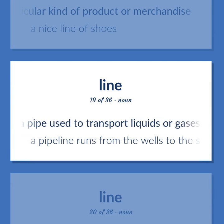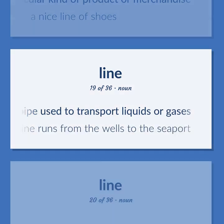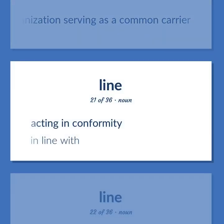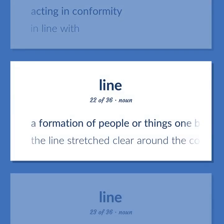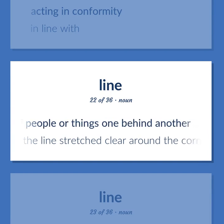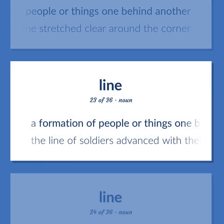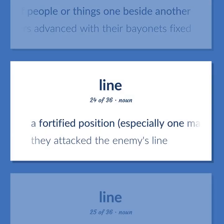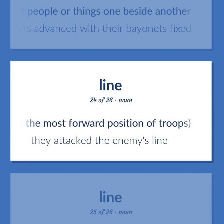A pipe used to transport liquids or gases. A pipeline runs from the wells to the seaport. A commercial organization serving as a common carrier. Acting in conformity, in line with. A formation of people or things one behind another. The line stretched clear around the corner. A formation of people or things one beside another. The line of soldiers advanced with their bayonets fixed. A fortified position, especially one marking the most forward position of troops. They attacked the enemy's line.